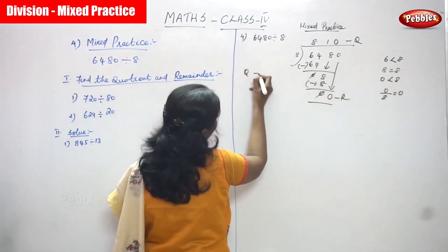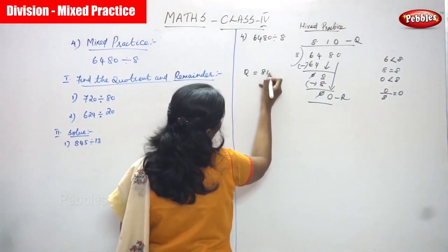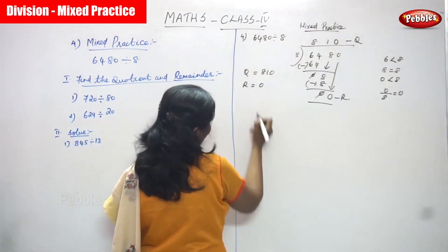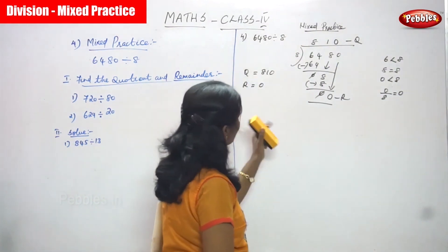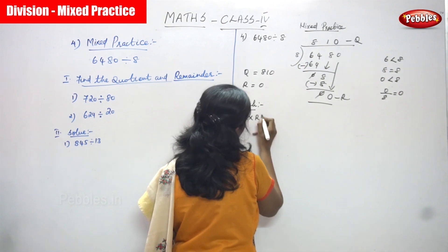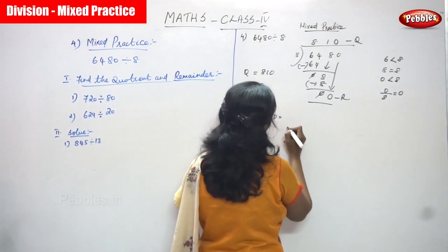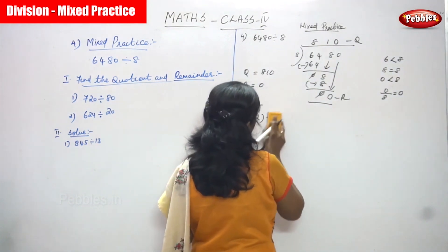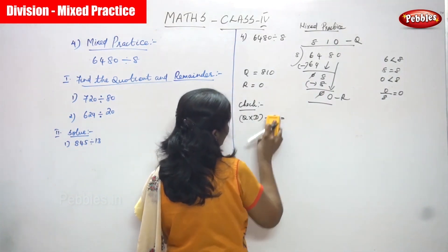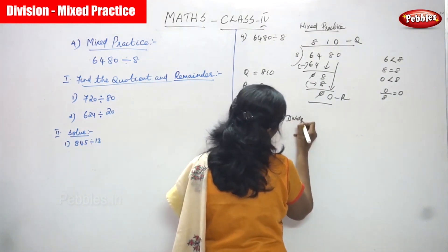So quotient is 810 and remainder is 0. So you just check this method. Check method: quotient into divisor plus remainder, you can get the dividend. That is, dividend means nothing but it is the question.